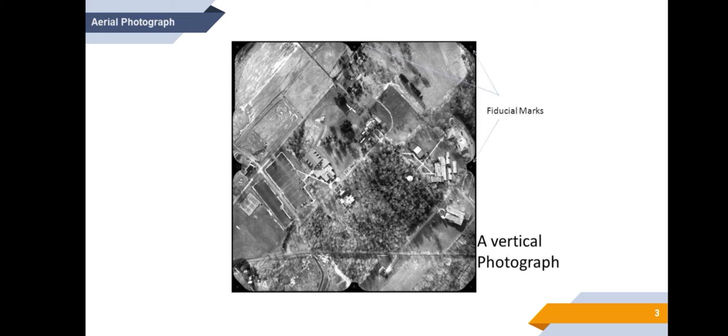This is a typical vertical aerial photograph and you can see some markings on the four corners as well as on the midpoints of the edges of this photograph. These markings are called the fiducial marks. Fiducial marks are the optically projected geometric figures which define the coordinate axis and geometric center of a single aerial photograph.